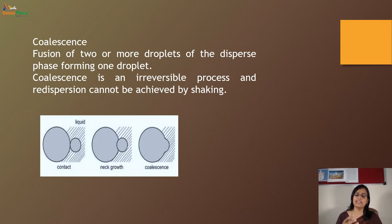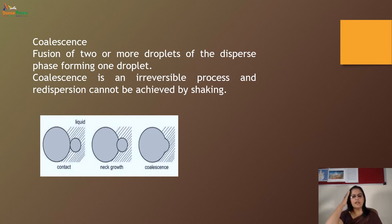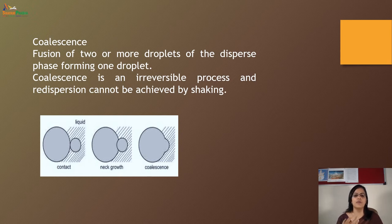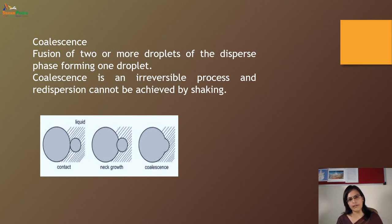Coalescence is the fusion of two or more droplets of the dispersed phase to form one droplet. As you can see in this figure, there is a droplet and additional growth at the neck of one single droplet leads to coalescence — meaning they merge and form one droplet. Coalescence is an irreversible process and redispersion cannot be achieved by shaking. So if you shake the emulsion thinking coalescence will reverse, it is not like this — it is completely irreversible.